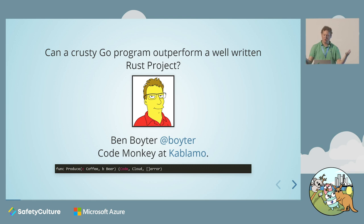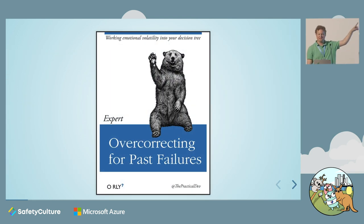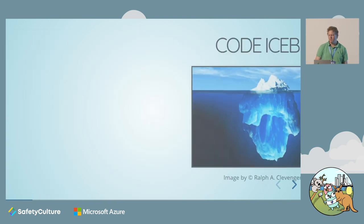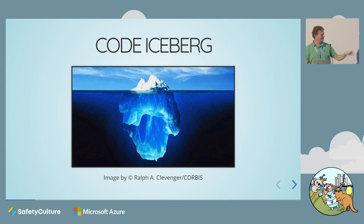What do we all do when we run into death marches or something we didn't like doing? We overcorrect for our past failures and work emotional volatility into our decision tree. So the problem was the project was a code iceberg.